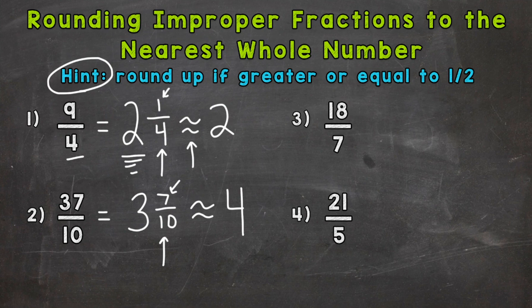On to number 3. We have 18 sevenths, so let's convert to a mixed number and divide. How many whole groups of 7 out of 18? Well, 2. That gets us to 14. So we have 4 left over. Keep the denominator of 7 the same. So 2 and 4 sevenths. So let's see. 3 and a half is half of 7, so this 4 is a little more than half, so we do round up. So 2 and 4 sevenths rounds to 3.